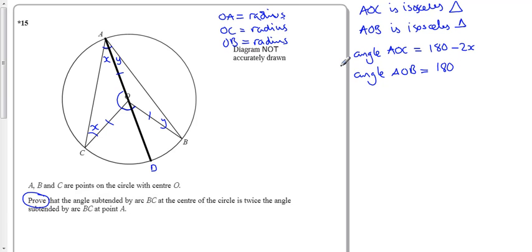And we also know that angle AOB is the same rule but for the other side. If you look at the triangle on the other side, from A to O to B, well this angle in here must be 180 minus 2Y.